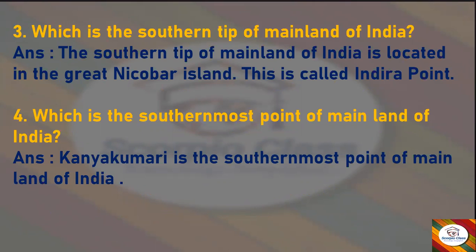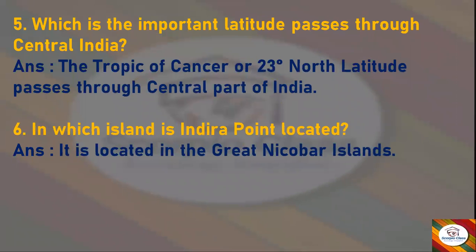Next question: Which is the southern tip of mainland India? Answer: The southern tip of mainland India is located in the Great Nicobar Island — this is called India Point. Next: Which is the southernmost point of mainland India? Answer: Kanyakumari is the southernmost point of mainland India. Next: In which island is India Point located? Answer: It is located in the Great Nicobar Islands.